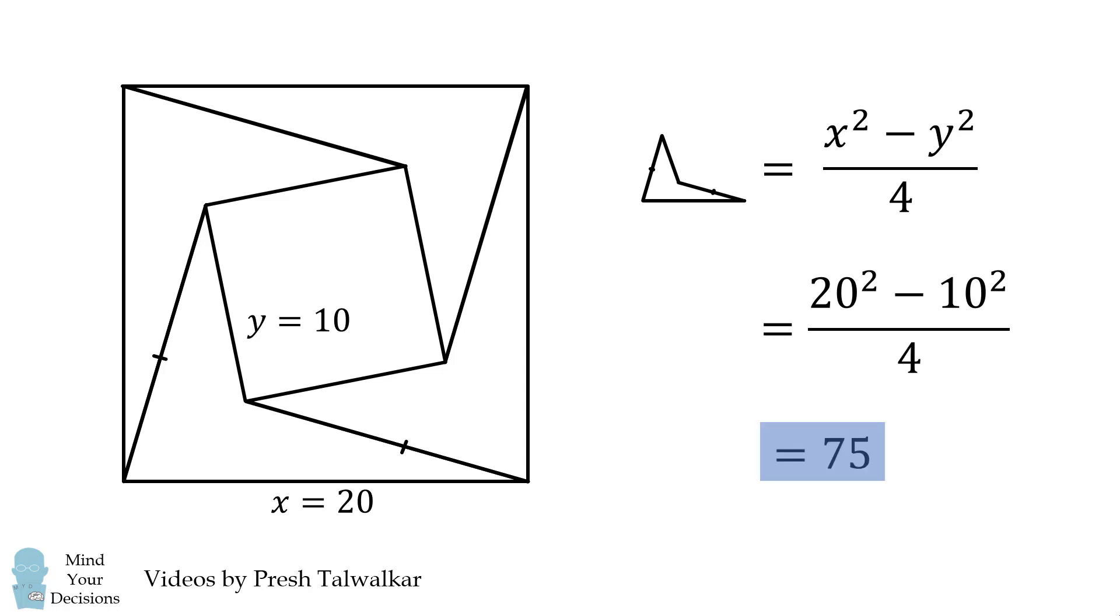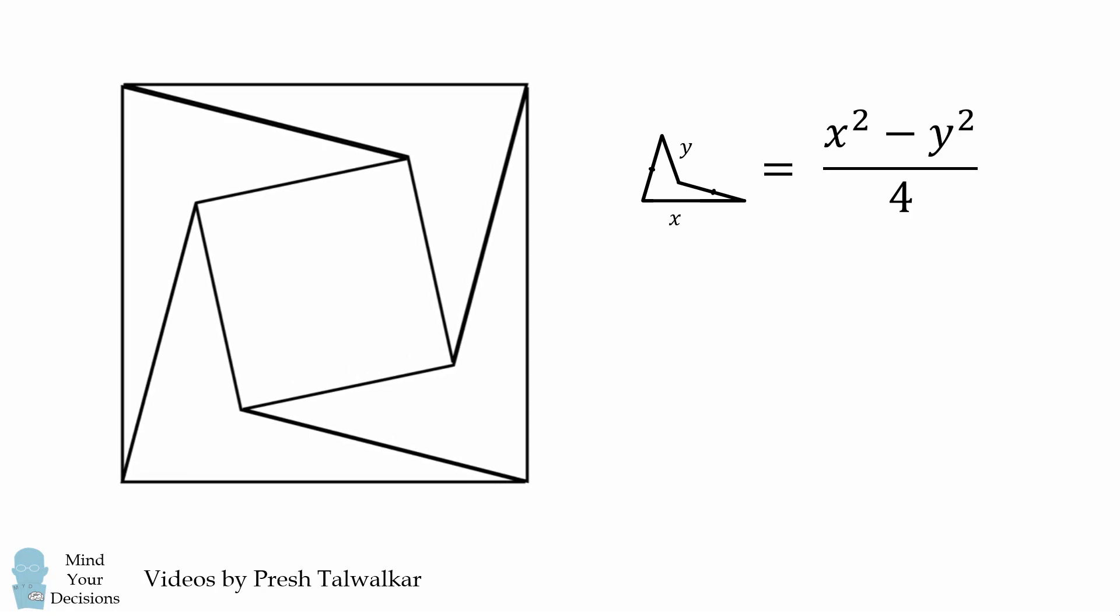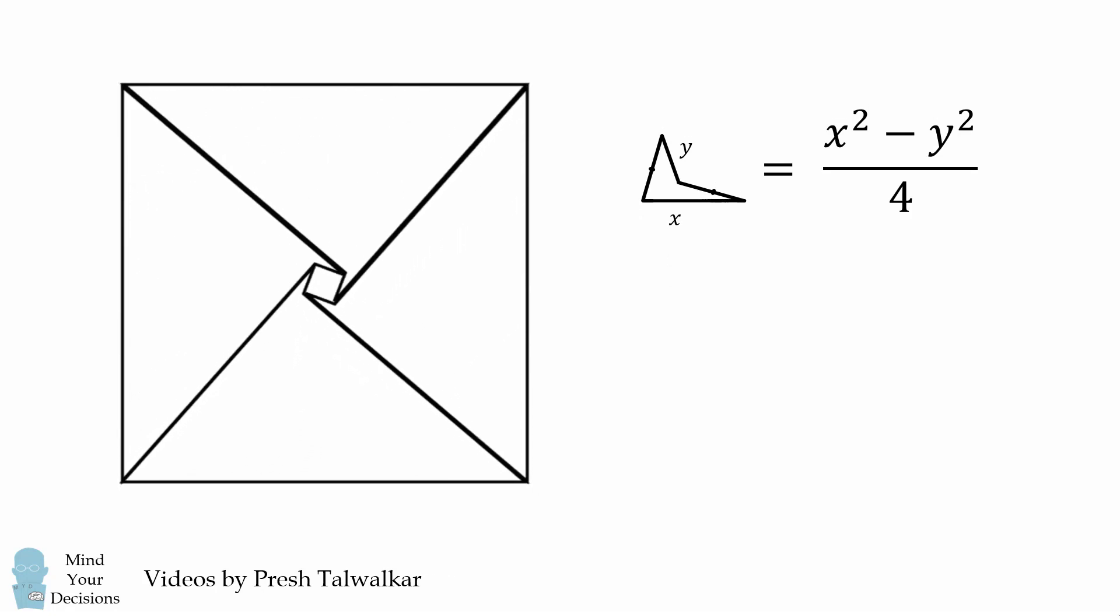But the beauty of this method is that we've solved the general case for X and Y. We thus have a simple formula that the area of this quadrilateral is equal to X squared minus Y squared all over 4.